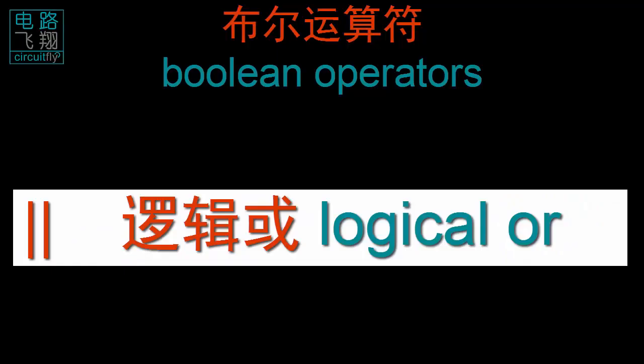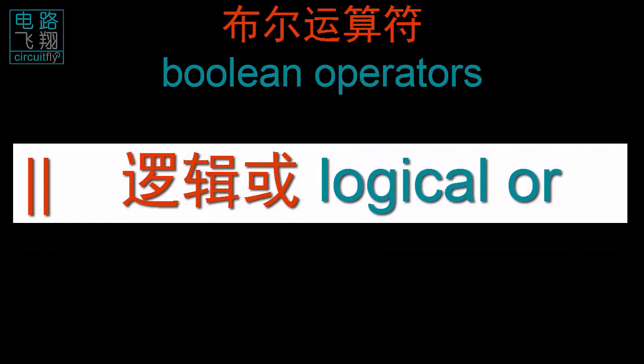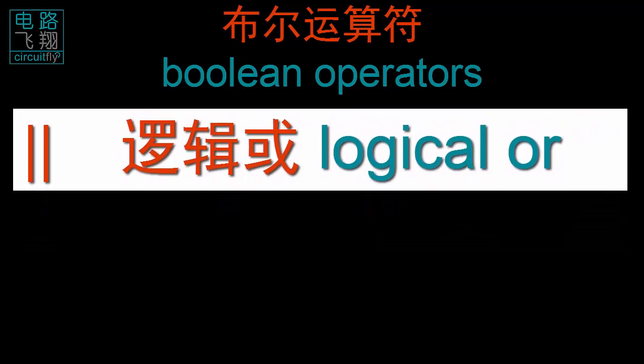逻辑或，logical OR. Two vertical bar symbols (||) are the logical OR operator. 只要任意一个操作数为真值时，运算的结果就为真值。This is the logical OR operator — the operation is true if either operand is true.